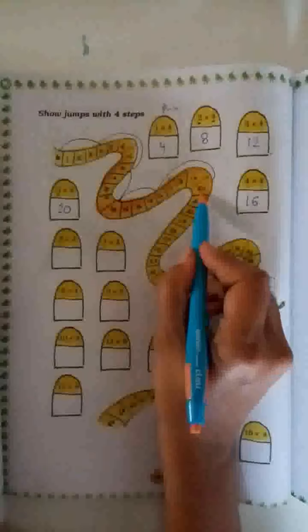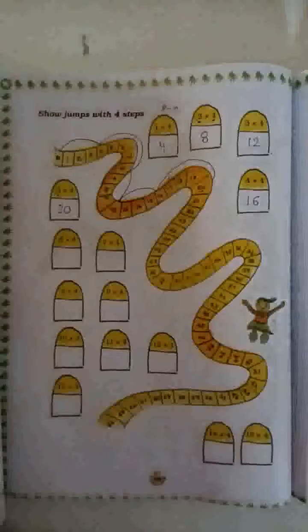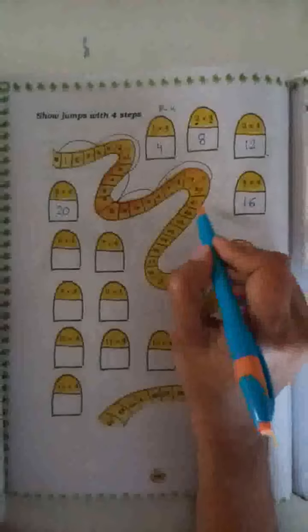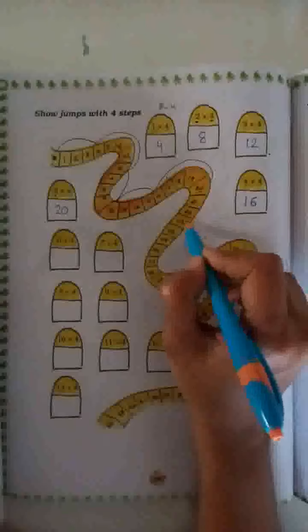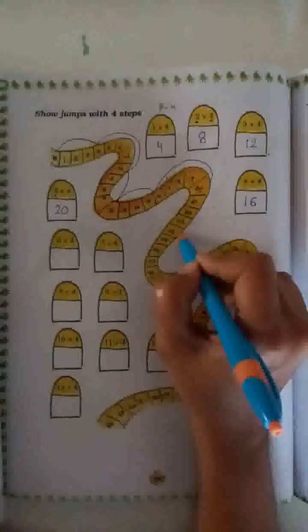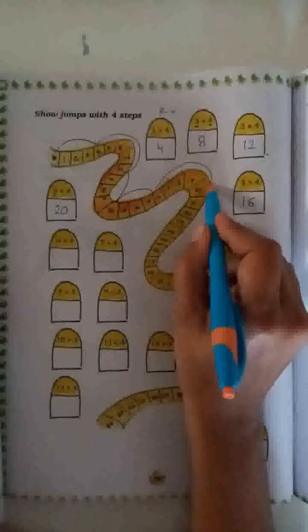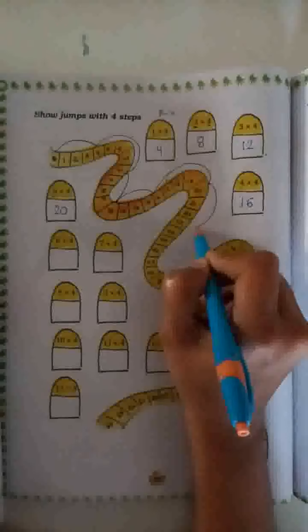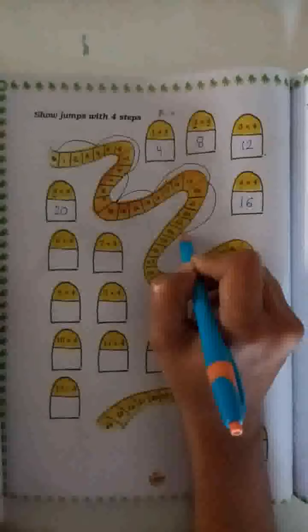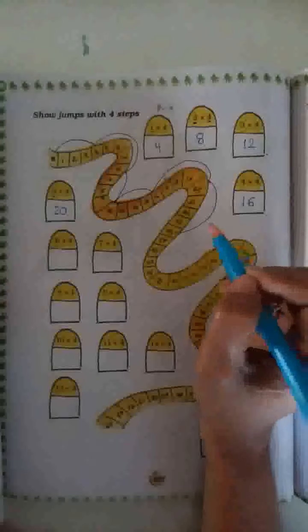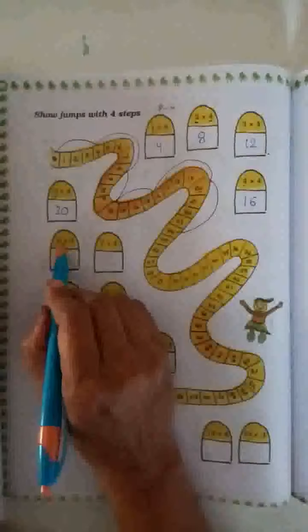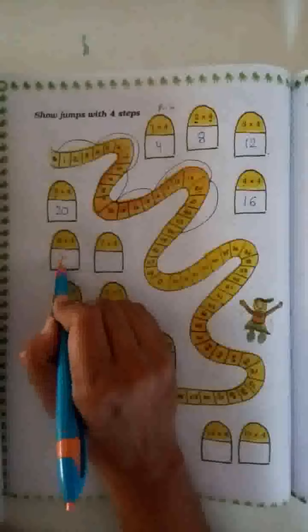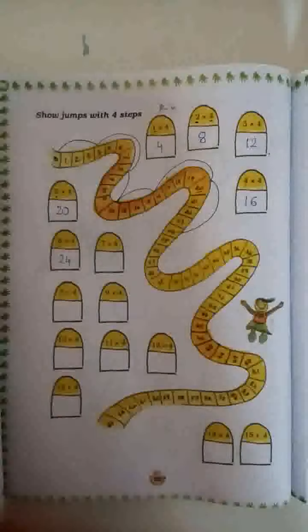Now again: 1, 2, 3, 4. It means 24. And it is our 6th jump. So 6 times 4 is equal to 24.